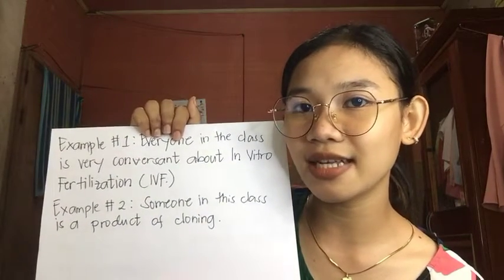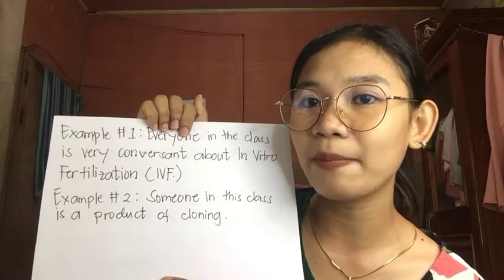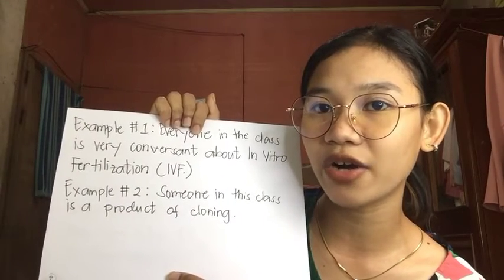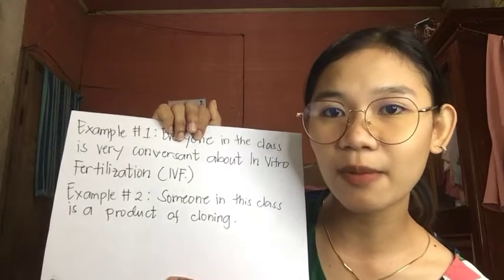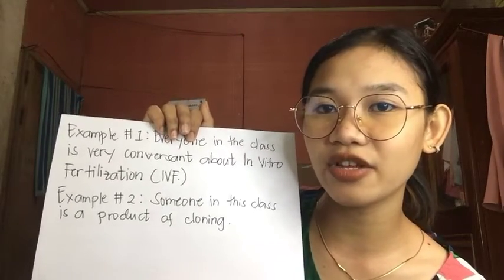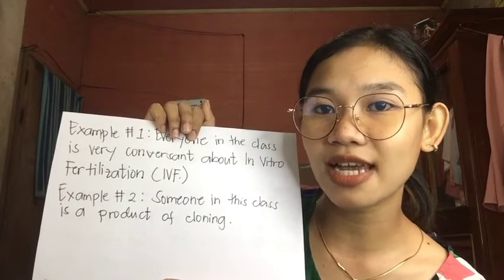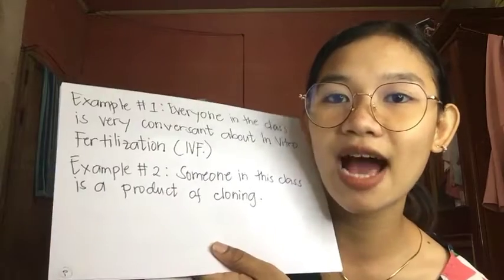Rule number nine: indefinite pronouns like each, everyone, everybody, someone, somebody, anyone, anybody, nobody, no one, something, either, neither, not one, and anything are singular and require a singular verb. Do not be misled by what follows. For example, 'Everyone in this class is very conversant about vitro fertilization or IVF.' Second: 'Someone in this class is a product of cloning.' We use indefinite pronouns 'everyone' and 'someone' with the singular verb 'is.'